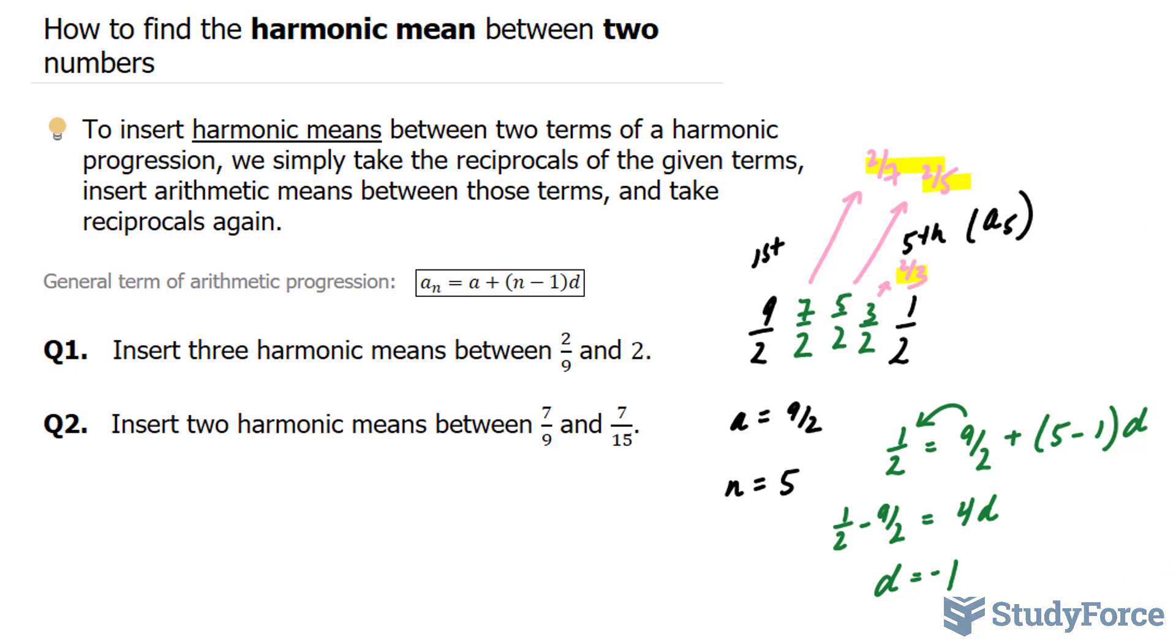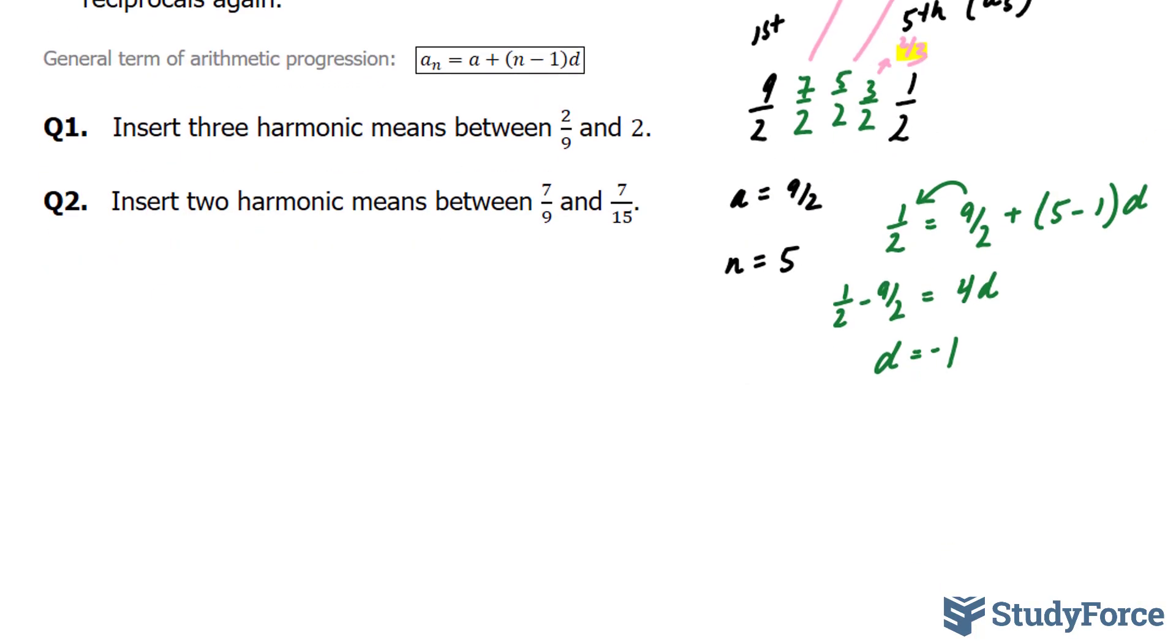Let's move on to question 2. In question 2, they ask us to insert two harmonic means between 7 over 9 and 7 over 15. Let's go ahead and write this out. 7 over 9 and 7 over 15. We'll take the reciprocals. 9 over 7 and 15 over 7.